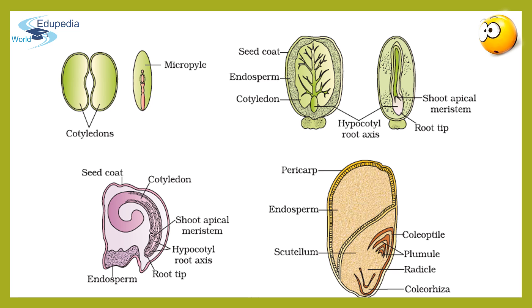Another distinctly visible structure is the coleoptile and coleorhiza. The coleoptile is the conical protective sheath which encloses the plumule in a monocot seed, while the coleorhiza is the undifferentiated sheath which encloses the radicle and root cap in a monocot seed. The coleoptile comes out of the soil, turns green and performs photosynthesis, while the coleorhiza remains inside the soil and is non-green in color. These few terms are quite important.